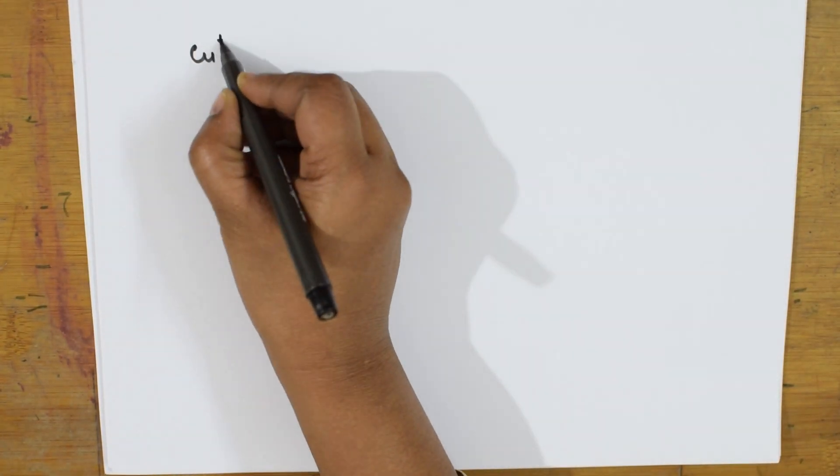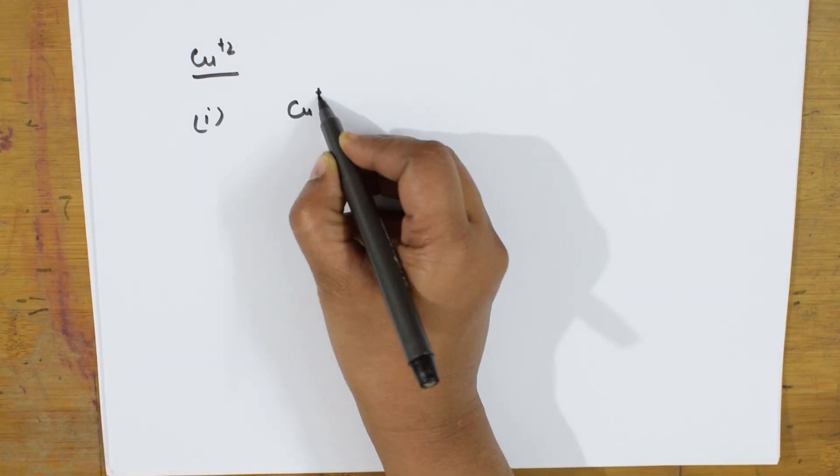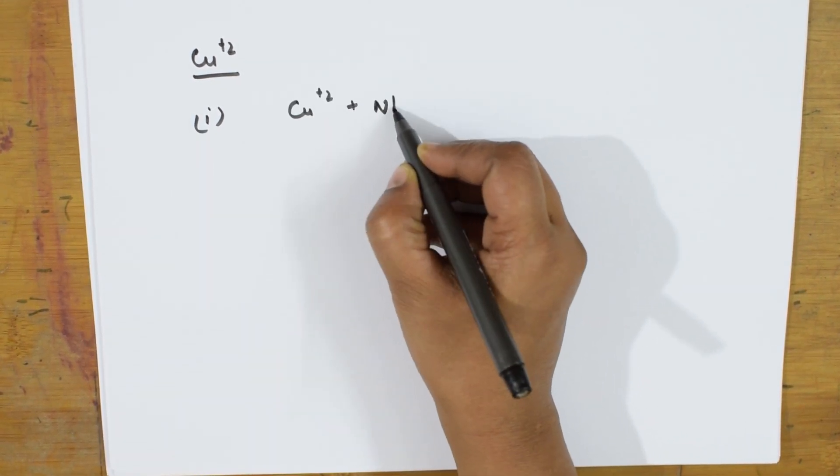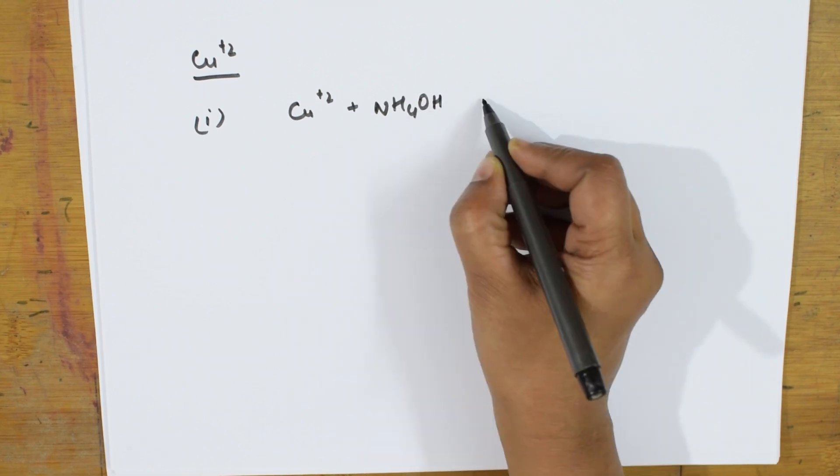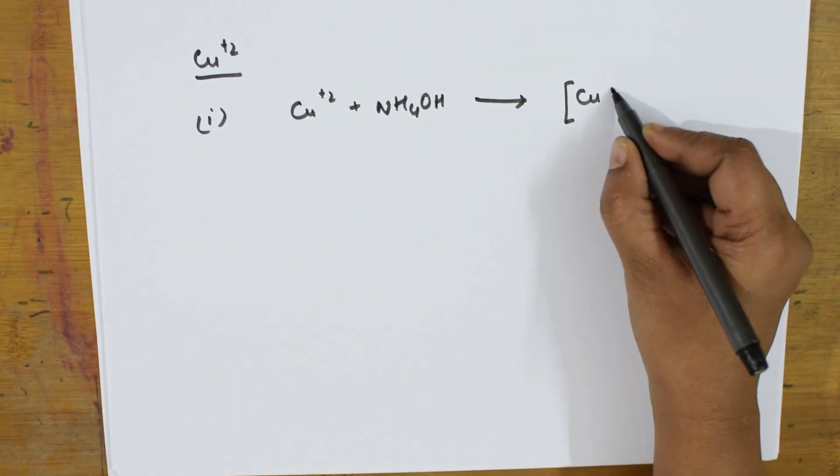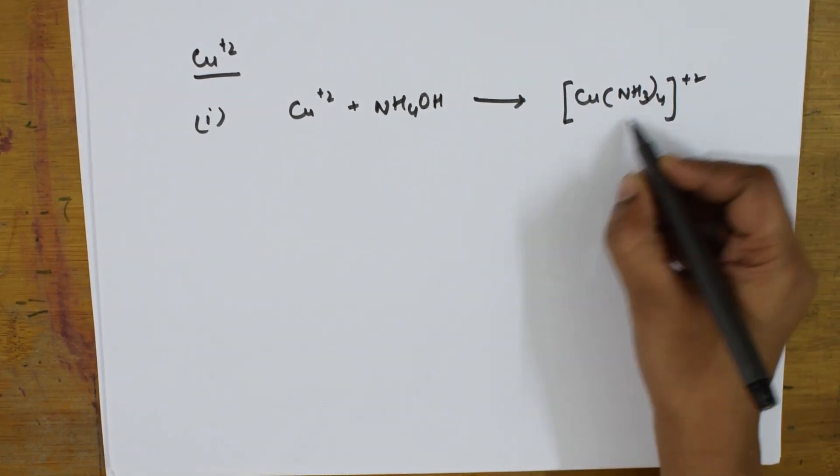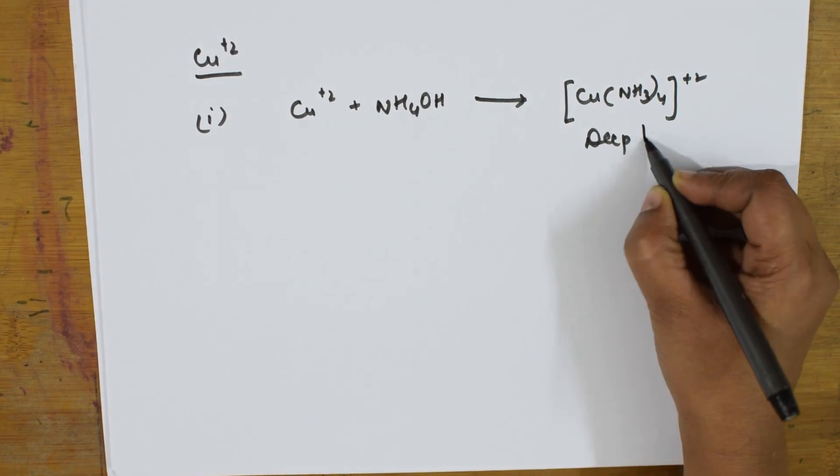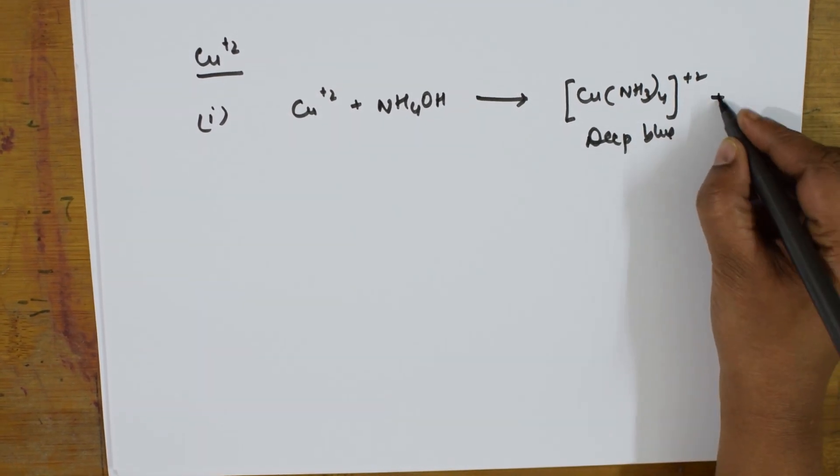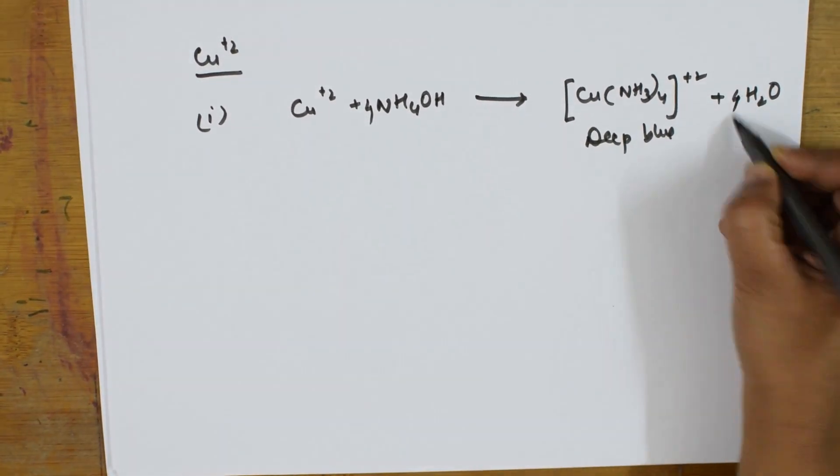Last, we will be seeing the test for copper. When we see the reactions of copper, we can go with, you take the copper ion, the salt and add ammonium hydroxide to this. As I told you, this is going to form a complex, coordinate covalent complex. This is deep blue in color plus water. This is 4 and this is 4.